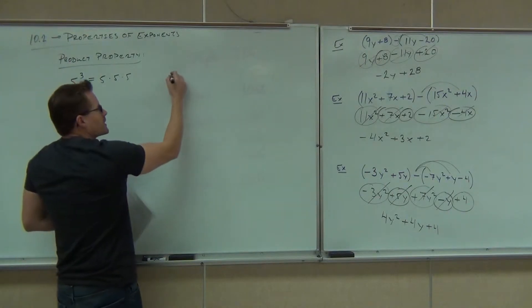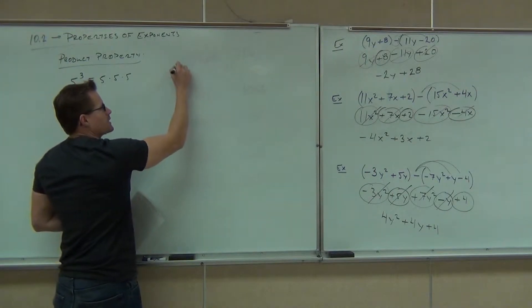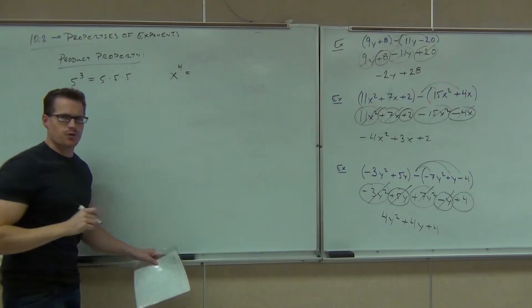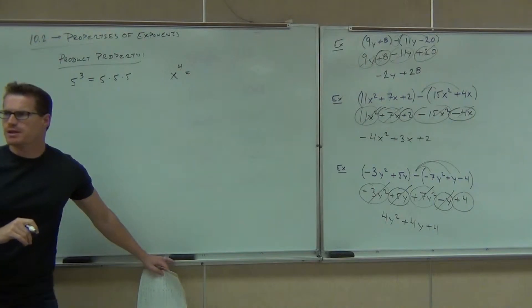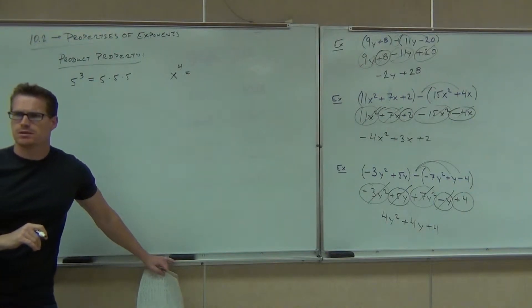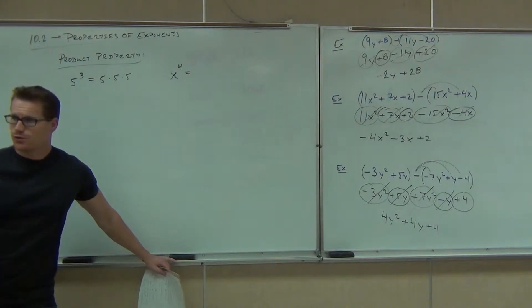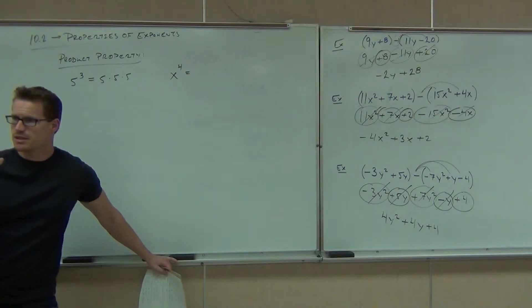We can extend that even with x's. What's x to the 4th actually mean? x times x times x times x — so 4 x's multiplied together.